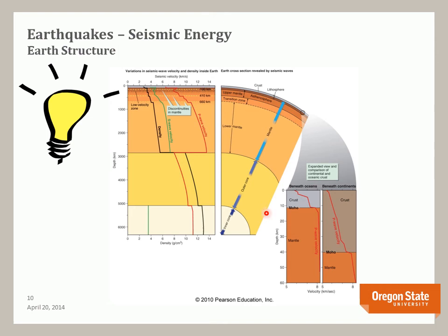Looking at an expanded view of the crust and mantle, P-wave velocity increases steadily, then slows slightly, then increases again when it hits the boundary between the crust and the mantle called the Moho, where velocity increases sharply. For continental crust it's much deeper and increases again. These changes in the slope of the line indicate the layers in the earth. This is how we use seismic wave velocities to determine what the inside of the earth looks like.